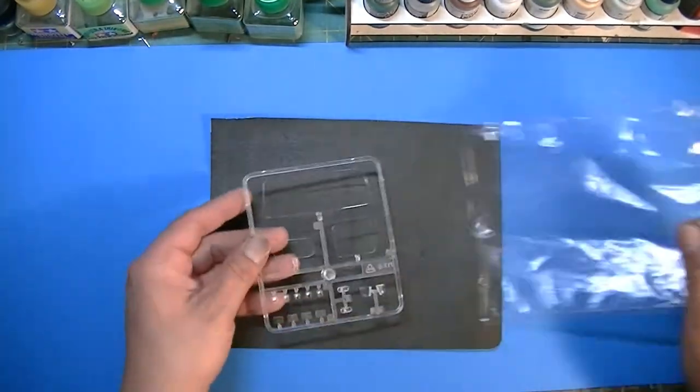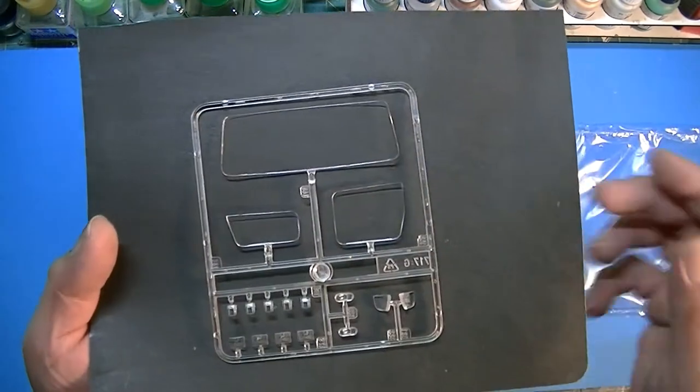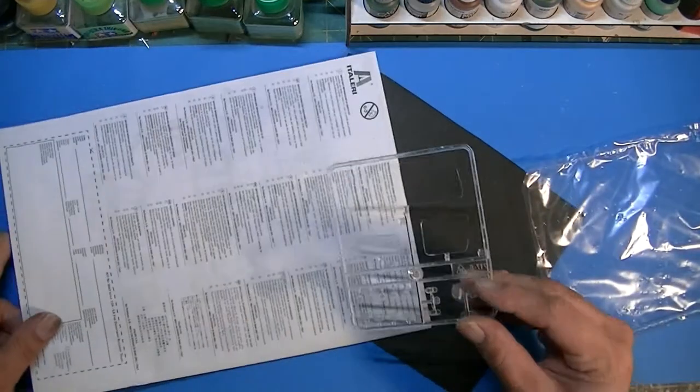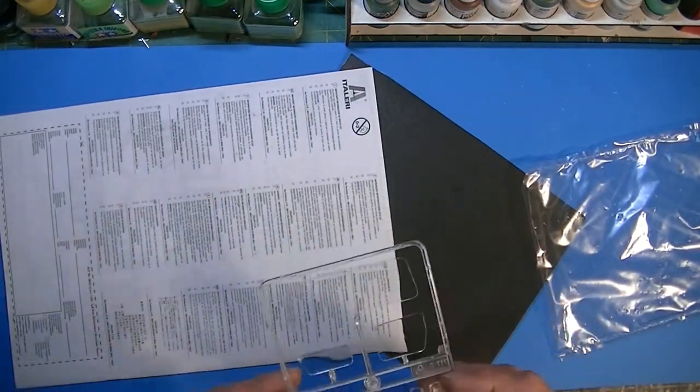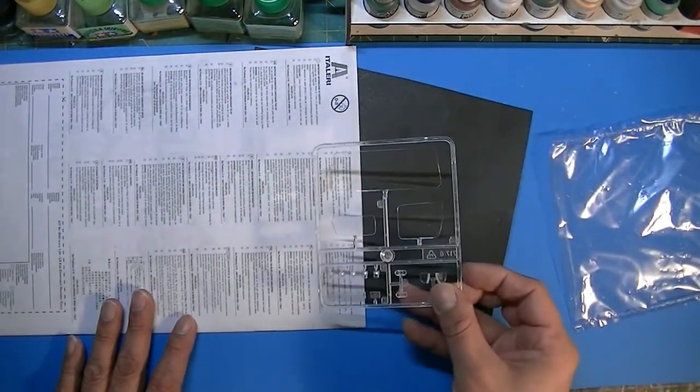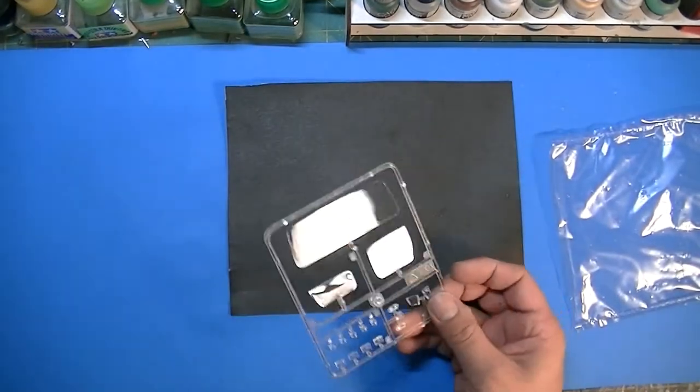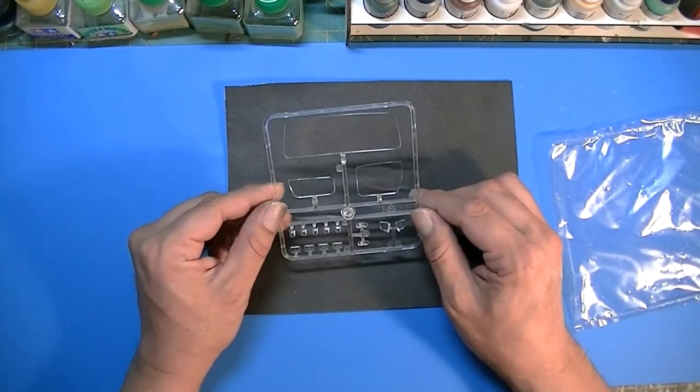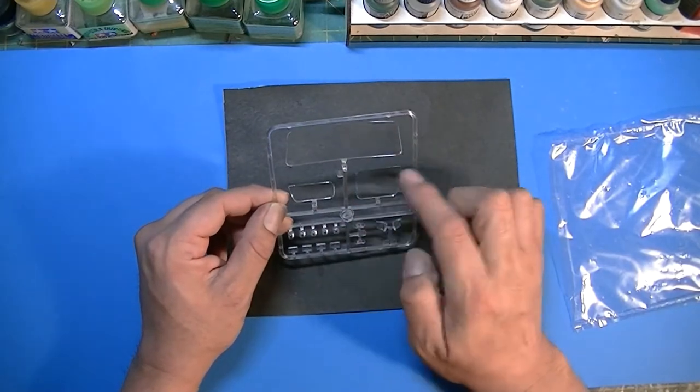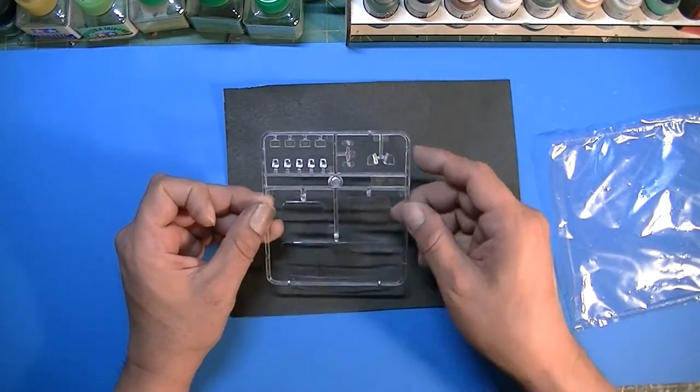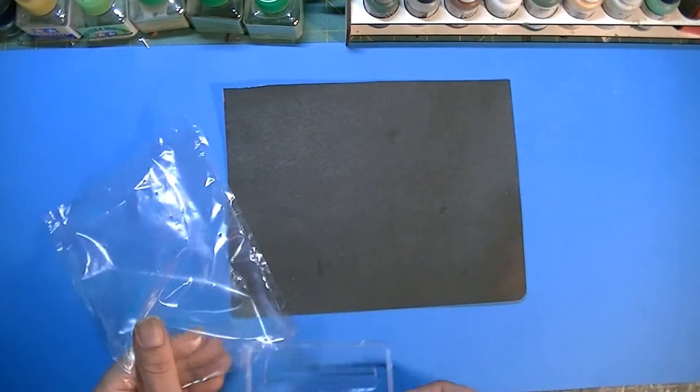Moving along here, we got some clear parts. Let's see, it's nice and clear. Let's see if we can show you how clear it is. I don't know if that helps, but anyways, yeah, fairly clear. We got two door panels, little door, big picture window, couple of lights, more light fixtures. We'll put that back in the bag.